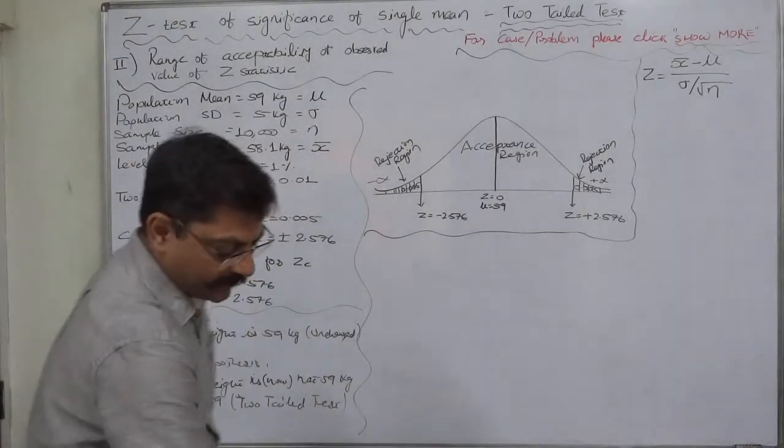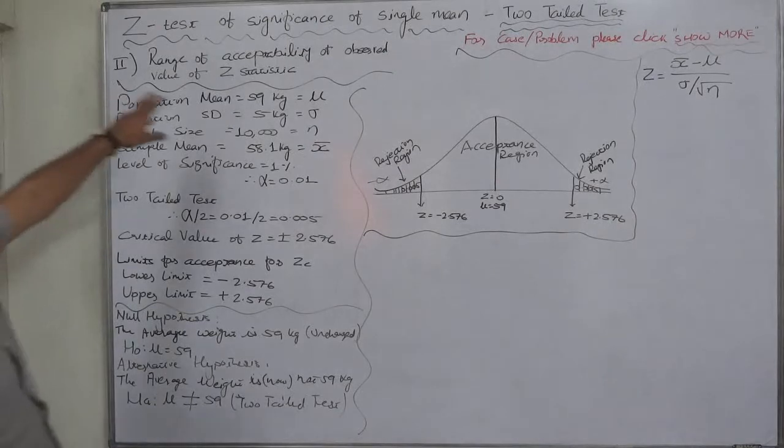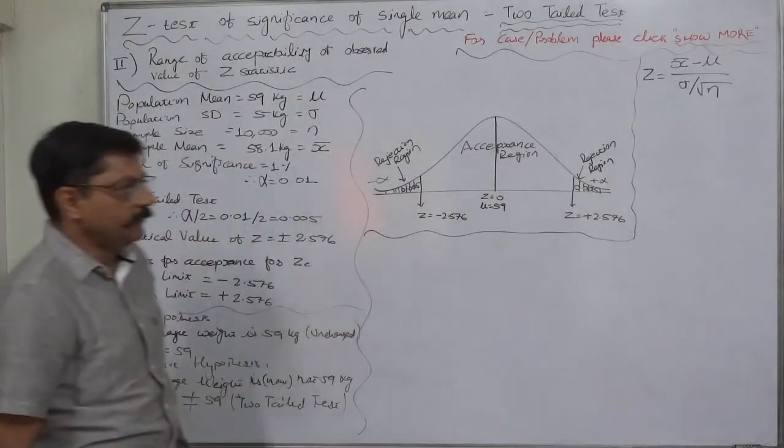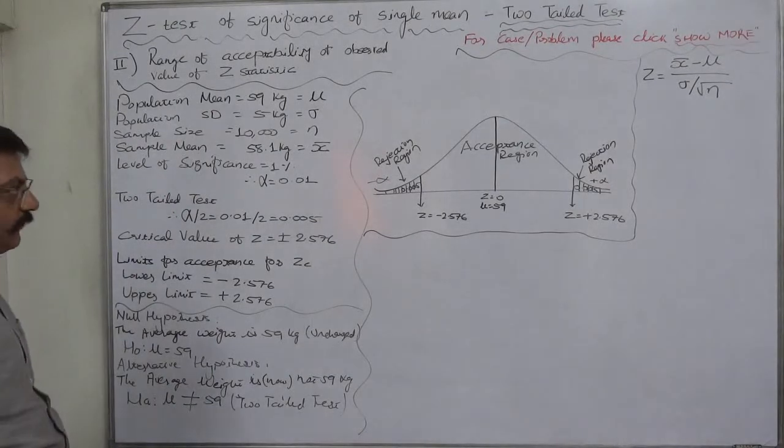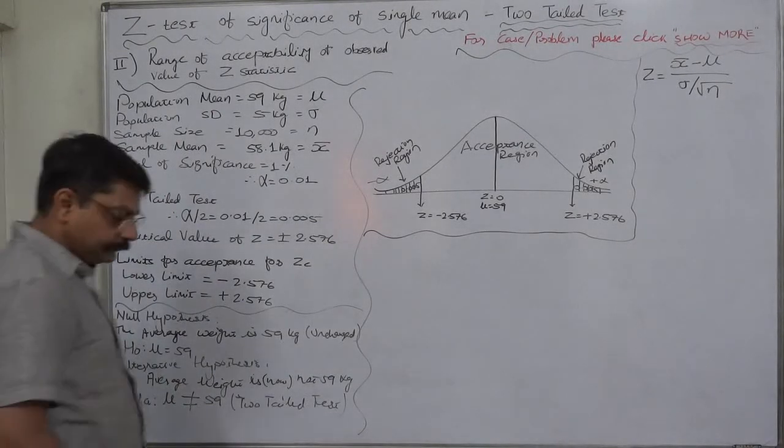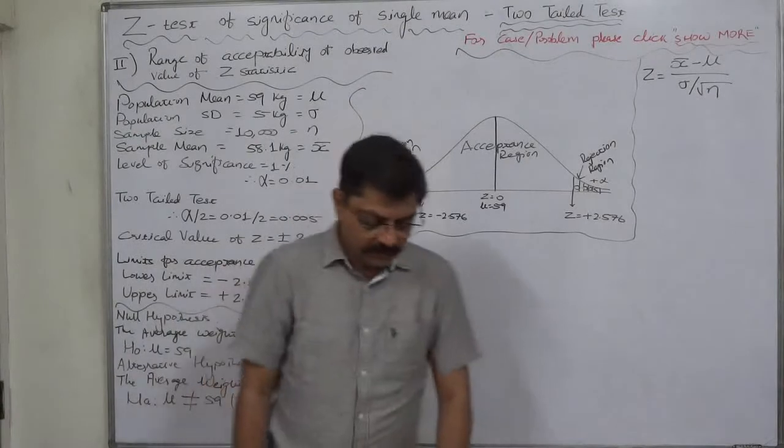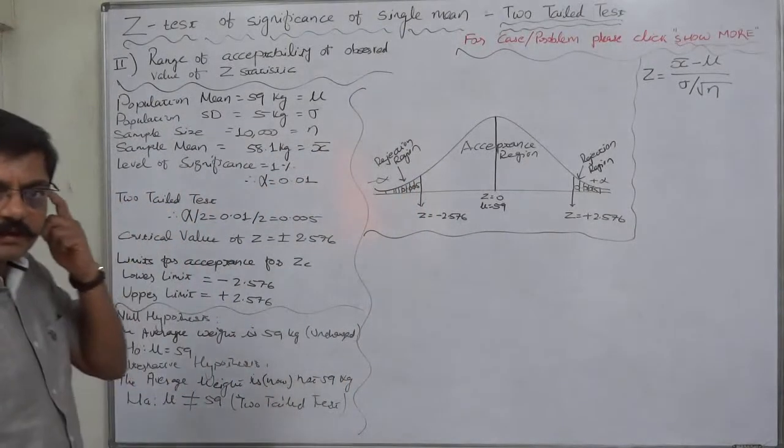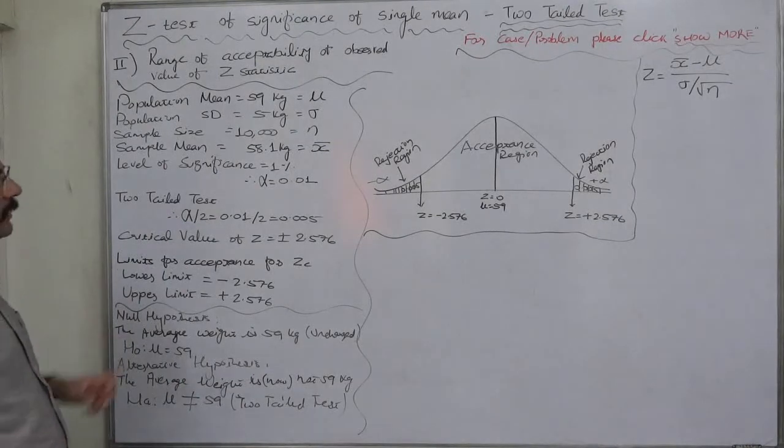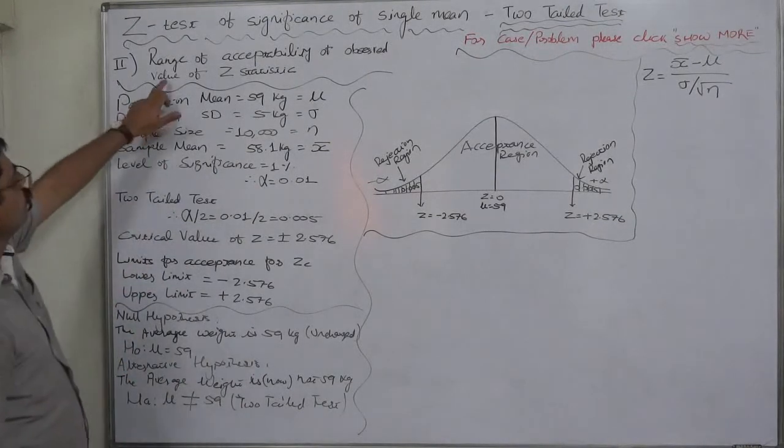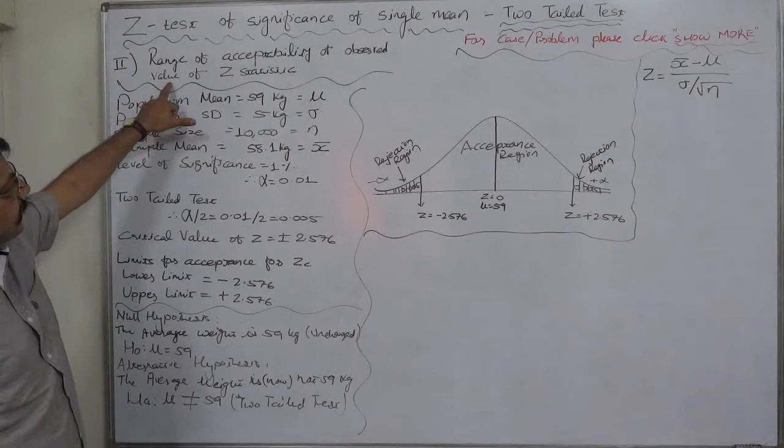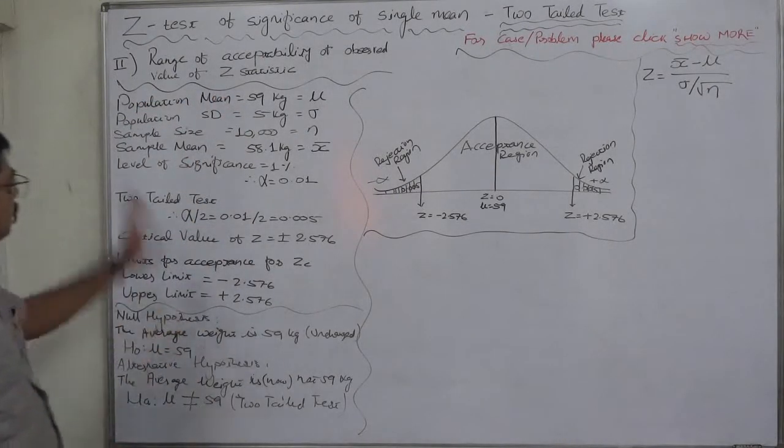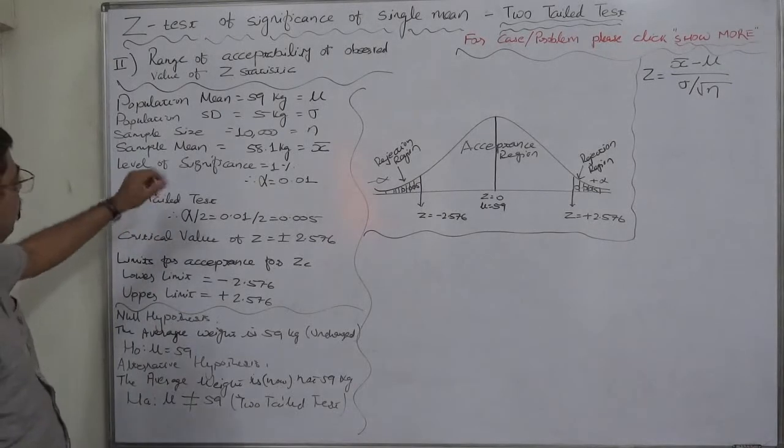Hello and welcome. Namaskar. Z-test of significance of single mean two-tailed test. We are discussing a case of an insurance company. We already read and discussed the original case in the previous lecture. We are going to use the same data, but now we are going to use the range of acceptability of observed value of Z-statistic. So, let's go through the data rapidly.